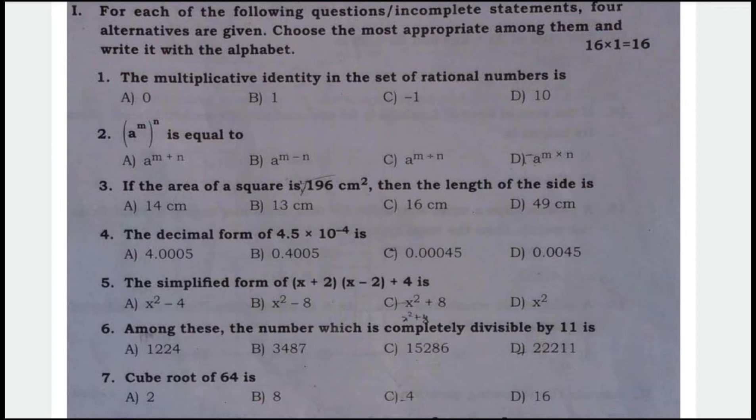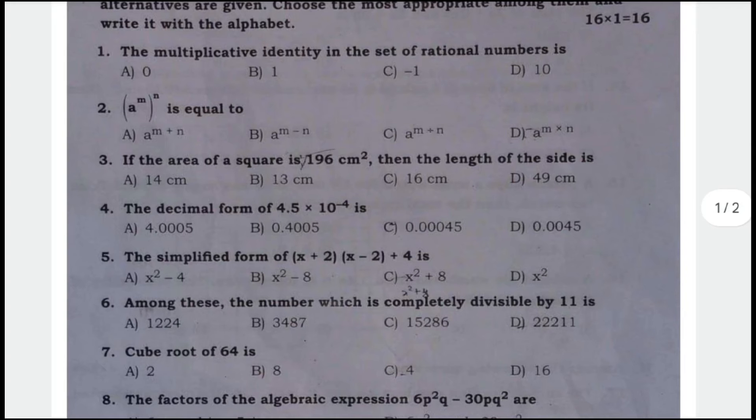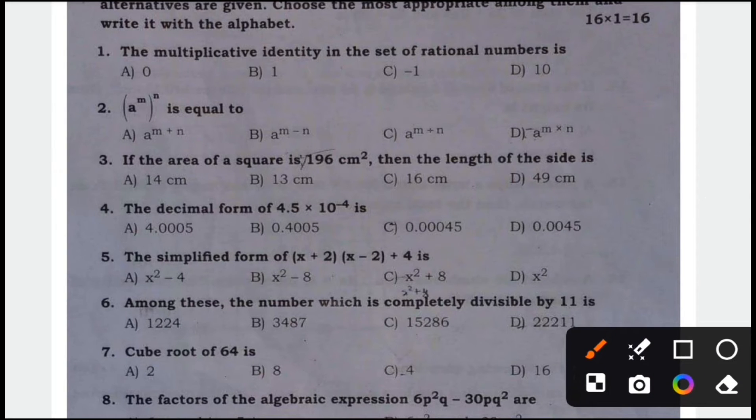Next question, the simplified form of x plus 2, x minus 2 plus 4. The correct answer is x square. Here, x into x is x square, plus into minus is minus 4, plus 4, minus 4 and plus 4 cancel, so x square remains. Therefore, option D is the correct answer.